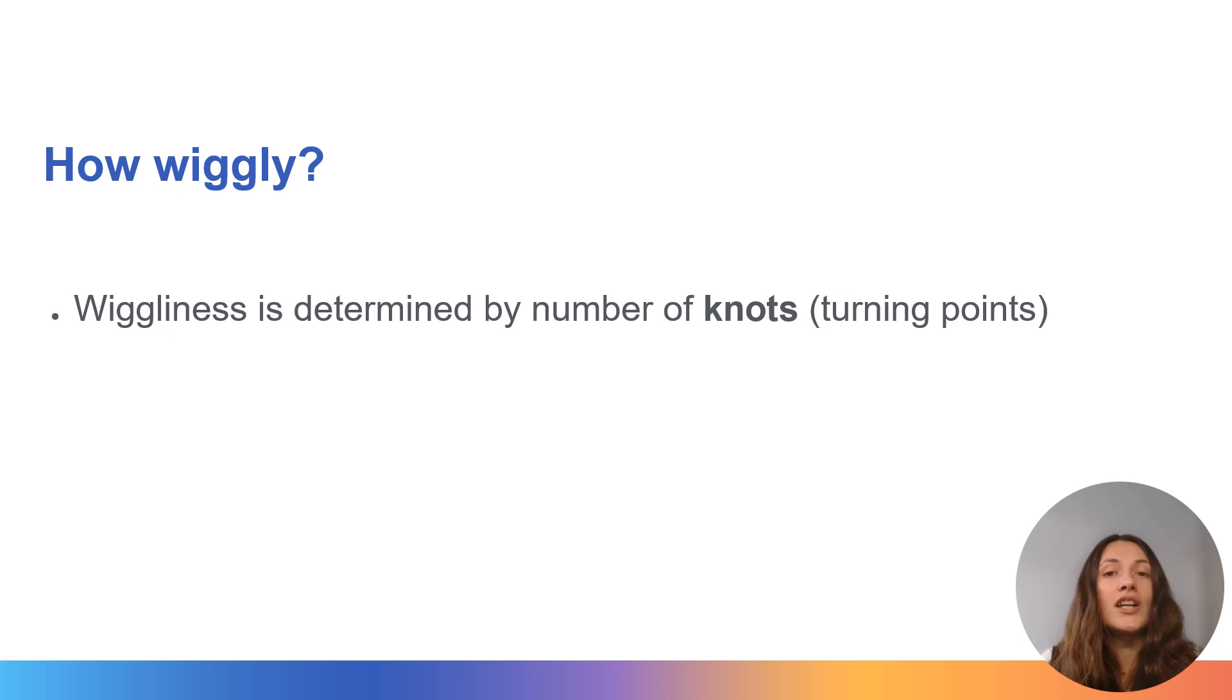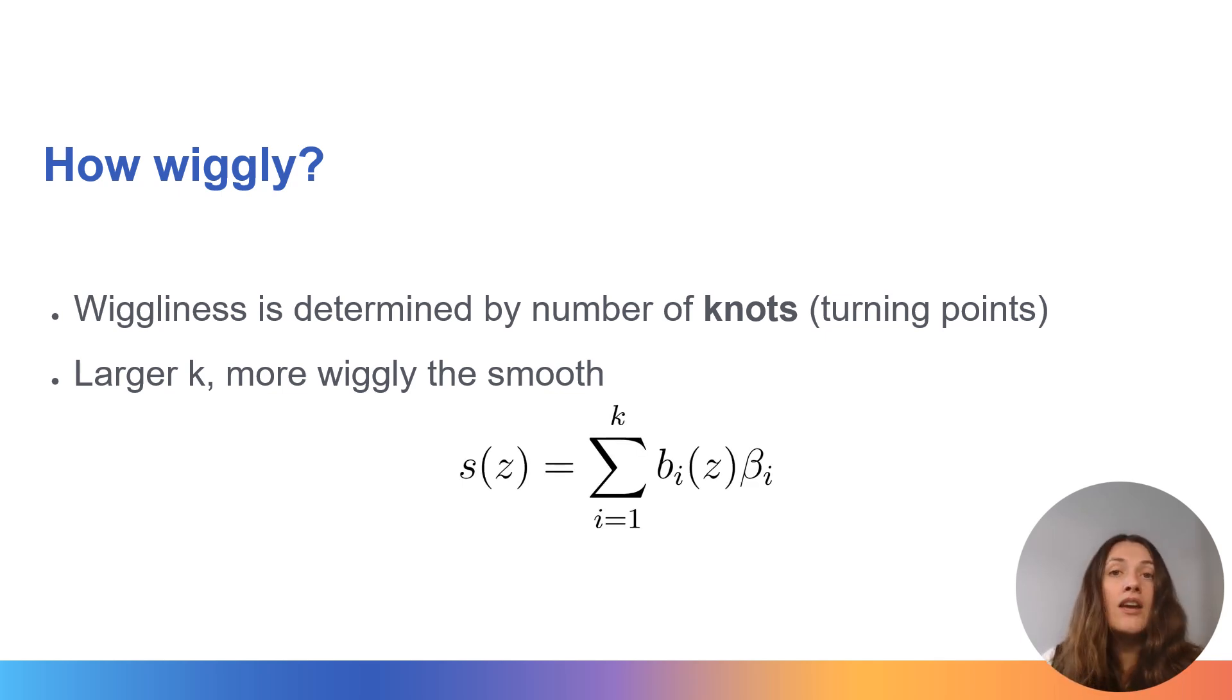Alongside the basis function and coefficients, another element that controls the shape of our smooth function is the number of knots or turning points in our basis functions. So the larger the number of knots or turning points, the more wiggly this function is going to be. And if we go back to that original determination of the smooth function, breaking it down into the linear combination of basis functions and coefficients, the number of basis functions and coefficients is determined by this k. So the higher the k is, the more turning points we have, the wigglier this smooth function is going to become.